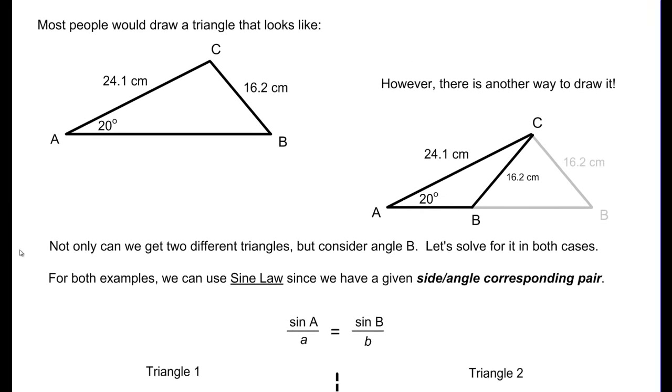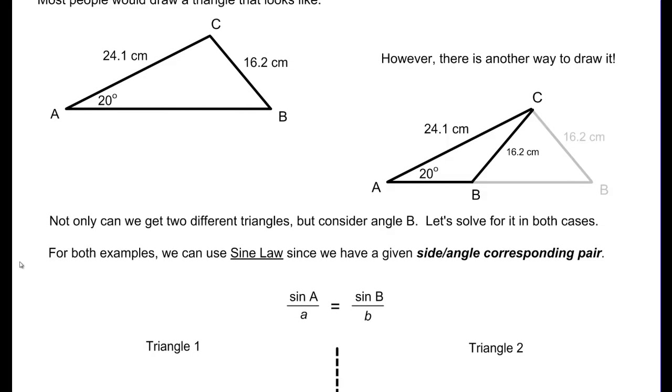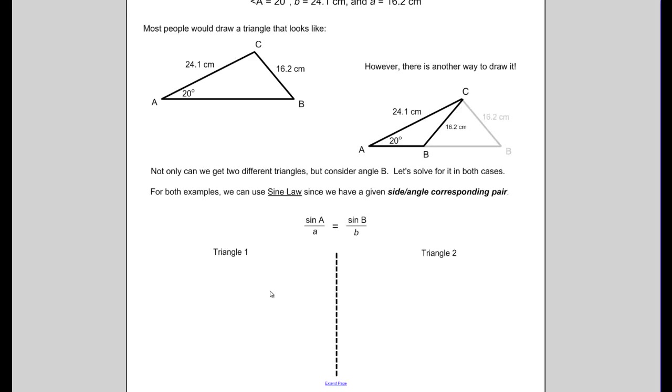So let's actually solve these for both cases for angle B. So let's say we've been asked to solve for angle B, and we'll see where we get sort of a little bit of a mix up. Okay, so we'll start with triangle 1. Notice how we'll be using the sine law for both triangles because I do have that angle side corresponding pair.